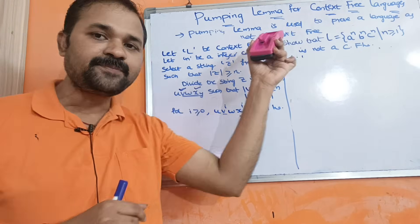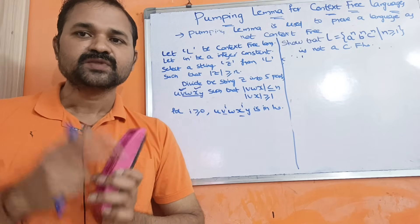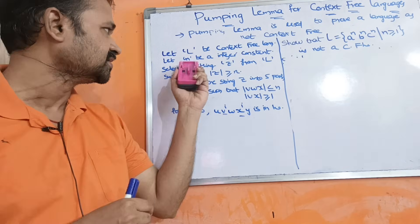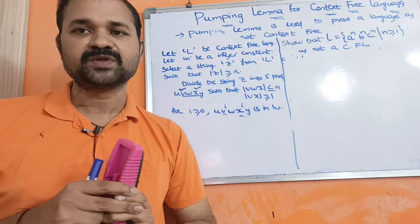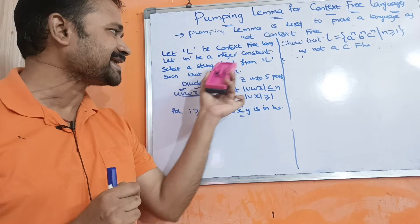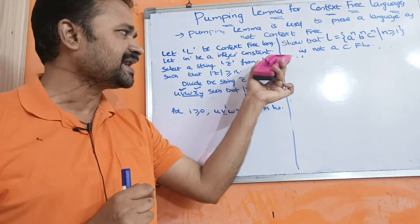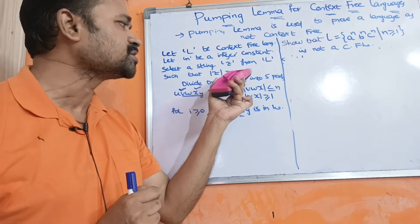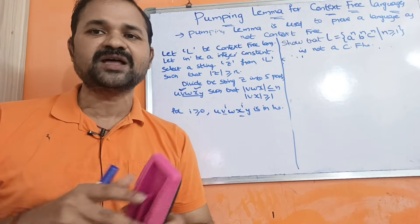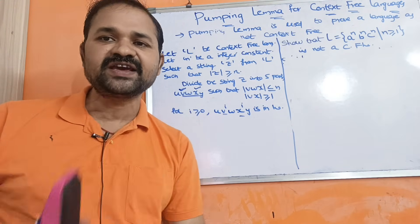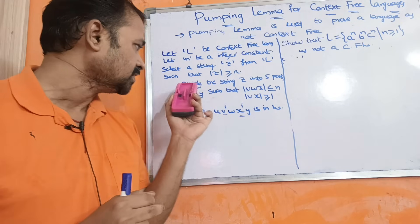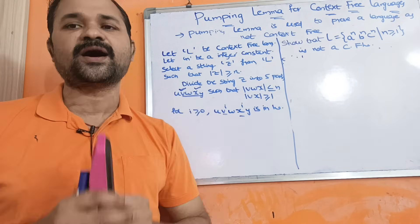Let L be a context-free language. Initially we have to assume the given language as a context-free language. Let n be an integer constant — we have to select an n value. Then select a string z from the language L such that |z| is greater than or equal to n. Next we have to divide the string into 5 parts.